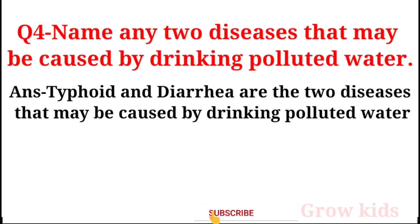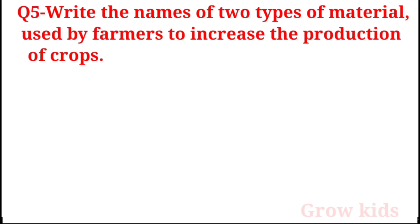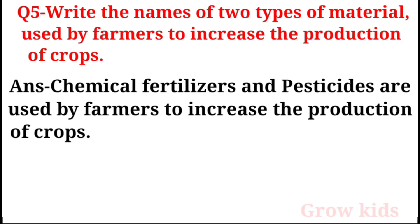Question 4: Name any two diseases that may be caused by drinking polluted water. Answer: Typhoid and diarrhea are the two diseases caused by drinking polluted water. Question 5: Write the names of two types of materials used by farmers to increase crop production. Answer: Chemical fertilizers and pesticides are used by farmers to increase the production of crops.